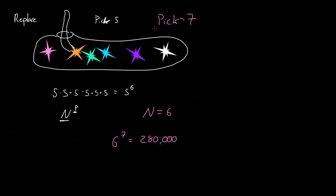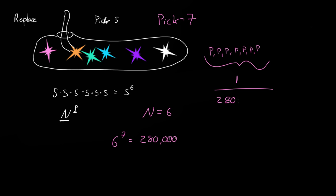So if we wanted to pick seven stars out and we wanted each one to be pink — first one pink, second one pink, and so on for all seven — we looked at it, replaced it, and mixed it up really good before picking again. Then that is one outcome out of the total of two hundred and eighty thousand.